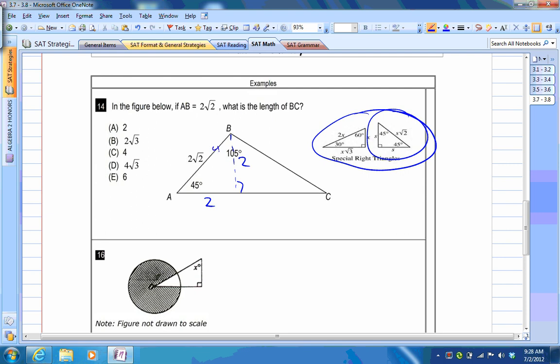And then this has to be 45 degrees, so that would be 60 degrees. And they want BC, so if that is 2, and that would be 30 degrees right here, then this has to be 4, because the hypotenuse is always double the shortest length. So the answer would be C.